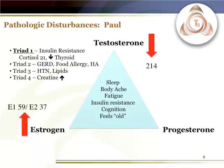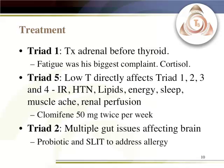We know testosterone is one of the bigger issues, and this is a case I use to demonstrate testosterone treatment. Looking at Triad 5 — testosterone, progesterone, estrogen — testosterone is low at 214. Estradiol was not too bad at 37, but estrone was a little elevated at 59. All the symptoms in the center of that triangle — sleep, body ache, fatigue, insulin issues, cognition, feeling old — can be accounted for by low testosterone.